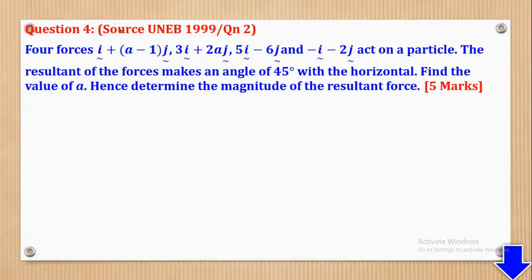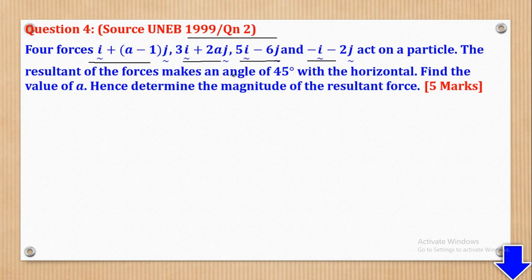Now we shall go to question 4. Question 4 came from UNAB 1999, paper 2, question 2. It says: four forces act on a particle, and the resultant of the forces makes an angle of 45° with the horizontal. Find the value of A, and hence determine the magnitude of the resultant force. This question is worth 5 marks.